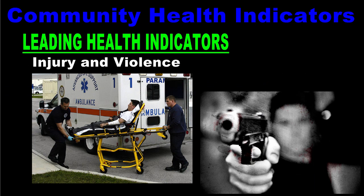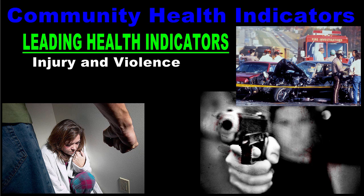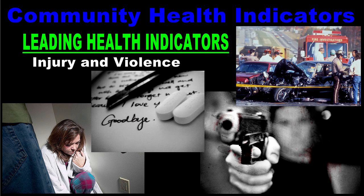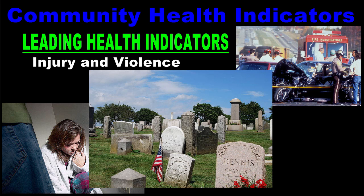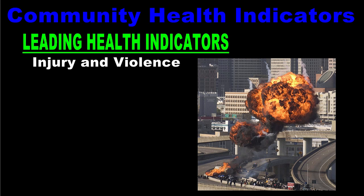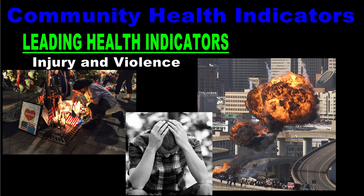Healthy People 2020 also identifies injury and violence as another leading health indicator. Injury and violence includes things that cause physical harm or death, for example car crashes, domestic abuse, suicides, or murder. Both unintentional injuries and those caused by acts of violence are among the top 15 killers of Americans, and the consequences can be more than physical. In addition to their immediate health impact, injuries and violence can affect the social and emotional health of victims, as well as their friends and family.